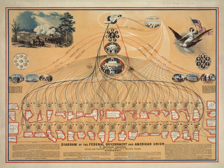The executive power in the federal government is vested in the President of the United States, although power is often delegated to the Cabinet members and other officials. The President and Vice President are elected as running mates by the Electoral College, for which each state, as well as the District of Columbia, is allocated a number of seats based on its representation in both Houses of Congress. The President is limited to a maximum of two four-year terms. If the President has already served two years or more of a term to which some other person was elected, he or she may only serve one more additional four-year term.